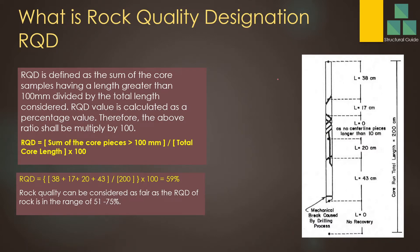What is the Rock Quality Designation — what is the RQD? RQD is defined as the sum of the core samples having a length greater than 100 mm, divided by the total length considered. When you take a sample, you can't take it continuously — it breaks at certain points, which may be due to a fracture, missing segment, or other reasons. So there are separations, and you can see those separations in the core sample here.